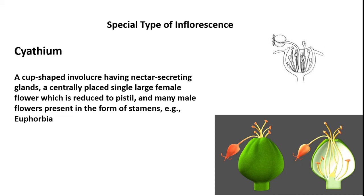Cyathium is a special type of inflorescence, neither racimose nor cymose. It is characterized by a cup-shaped envelope having a nectar-secreting gland. There is a centrally placed single large female flower reduced to a pistil, and many male flowers present in the form of stamens. Examples include Euphorbia and Calotropis species, Manihot, and others where the inflorescence is a Cyathium type. The cup-shaped envelope has a nectar-secreting gland, with a central female flower reduced to a pistil and numerous male flowers.